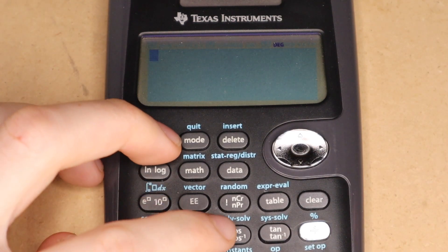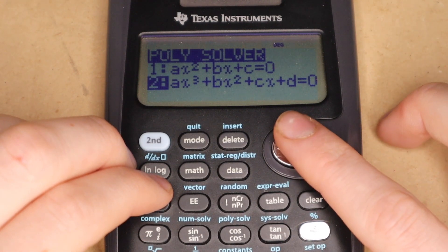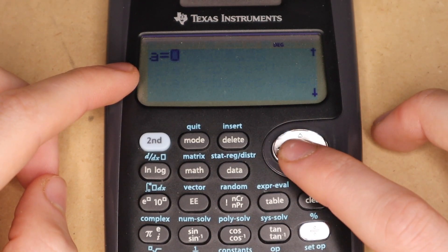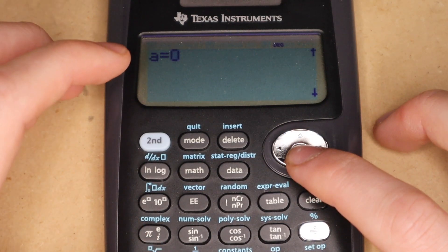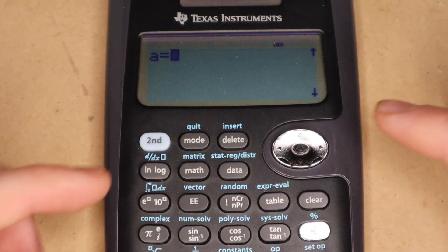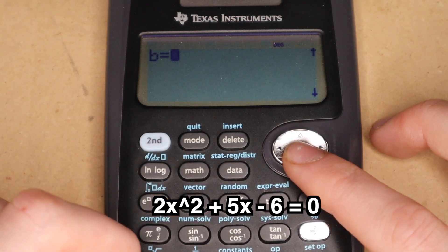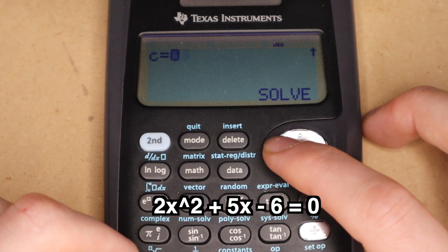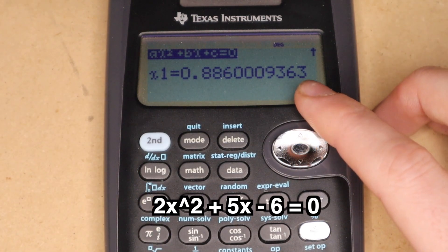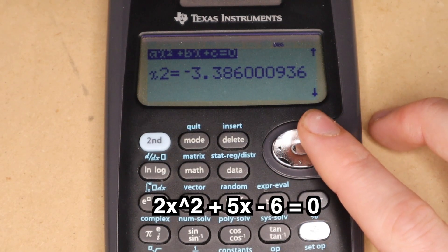Next is the polynomial solving function. For this, you can either do degree 2 or degree 3 polynomials. So you just choose the degree you want, and then press enter. And then enter in your a, b, and c values. So for me, if I wanted to solve this equation on the screen here, I would enter a as 2, b as 5, and c as negative 6, and then press enter. And it would give me my first possible value of x, and then my second possible value of x.